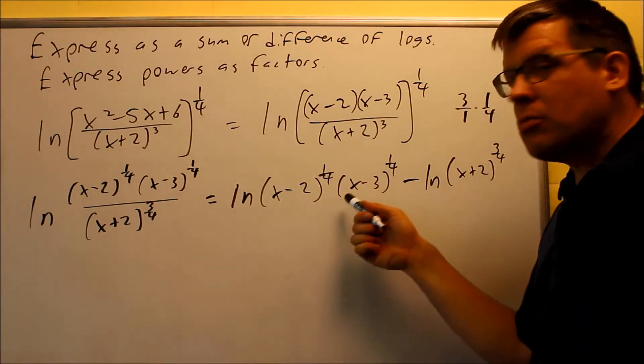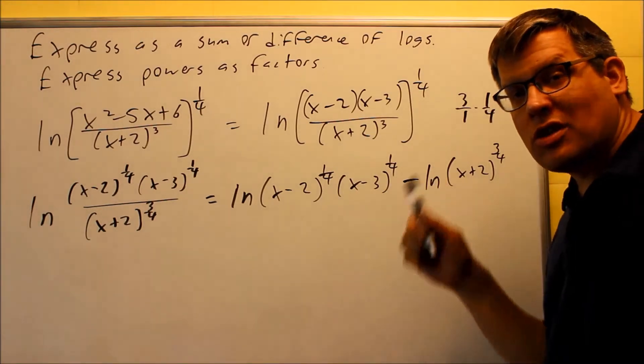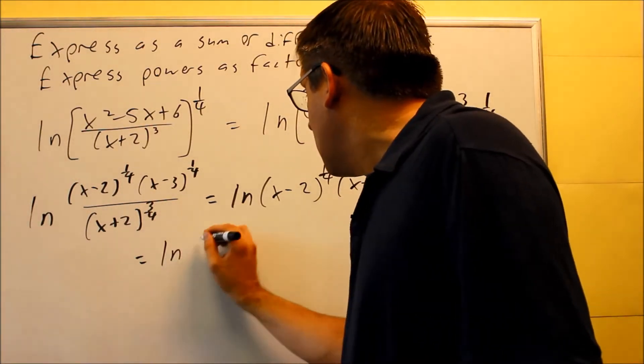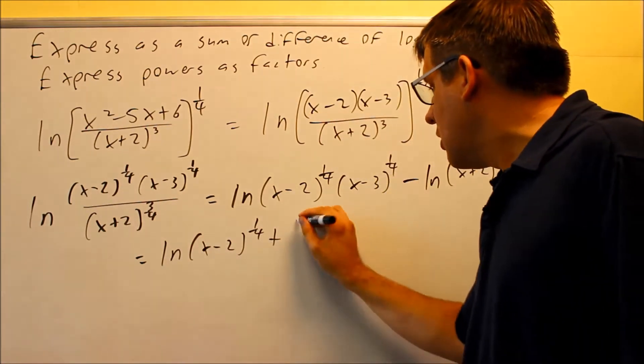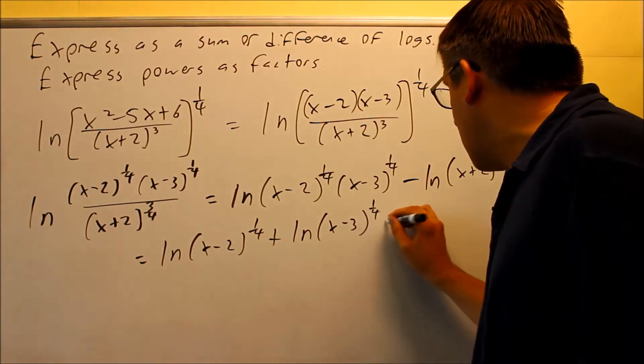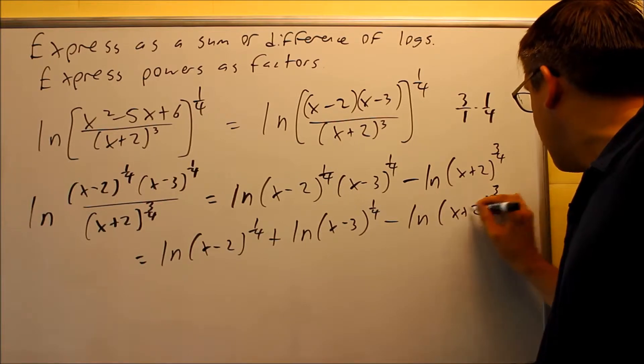But I still have this. This is still being multiplied together. I can do one more step. I want to break that apart by using rule number six. Multiplication turns into addition. So I have ln x minus two to the one-fourth plus ln x minus three to the one-fourth, and then minus ln x plus two, three-fourths.